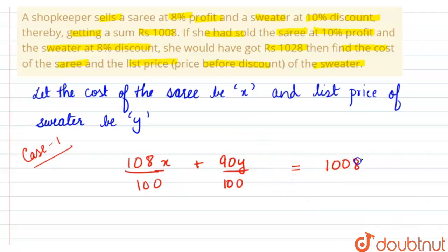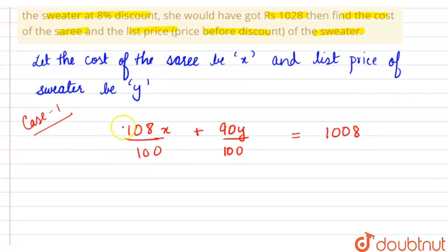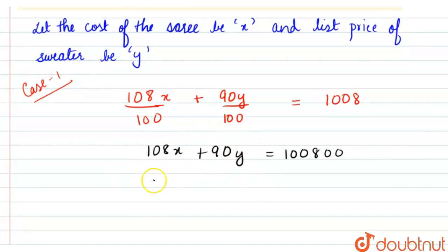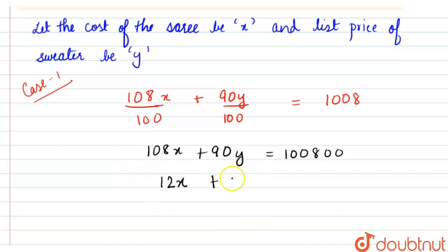So: 108x + 90y = 100800. If we divide both sides by nine, we get 12x + 10y = 11200. This is equation number 1.